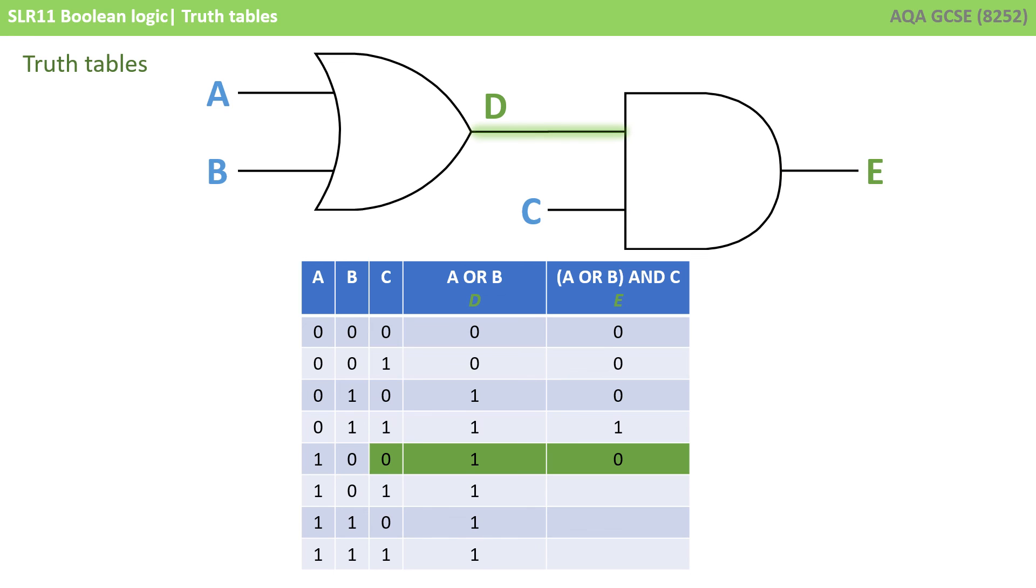Then we have 0, another 1, a 0 and a 1. So although at first it can look a bit daunting, if you break it down step by step, it really is quite straightforward.